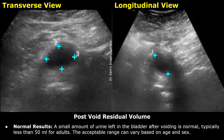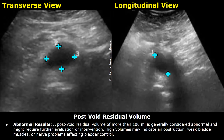A small amount of urine left in the bladder after urination is normal. A value of 50 ml or less is normal in adults, although this range can vary based on age and gender. A post-void residual volume of more than 100 milliliters is considered abnormal and requires further evaluation.